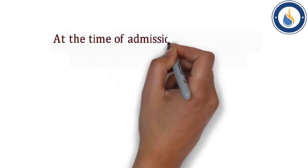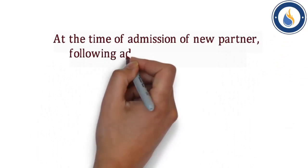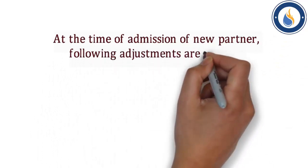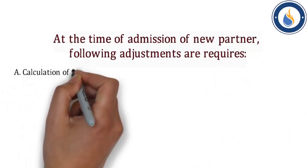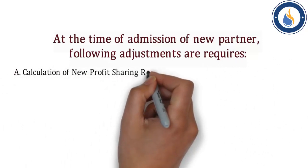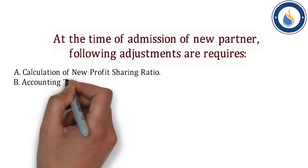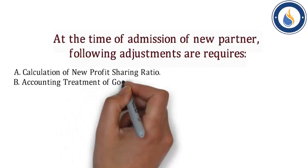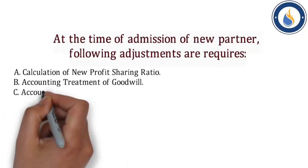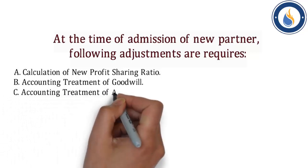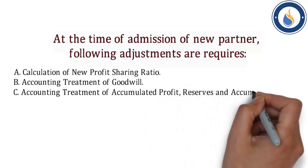At the time of admission of a new partner, following adjustments are made: 1. Calculation of new profit sharing ratio. 2. Accounting treatment of goodwill. 3. Accounting treatment of accumulated profits, reserves, and accumulated losses.